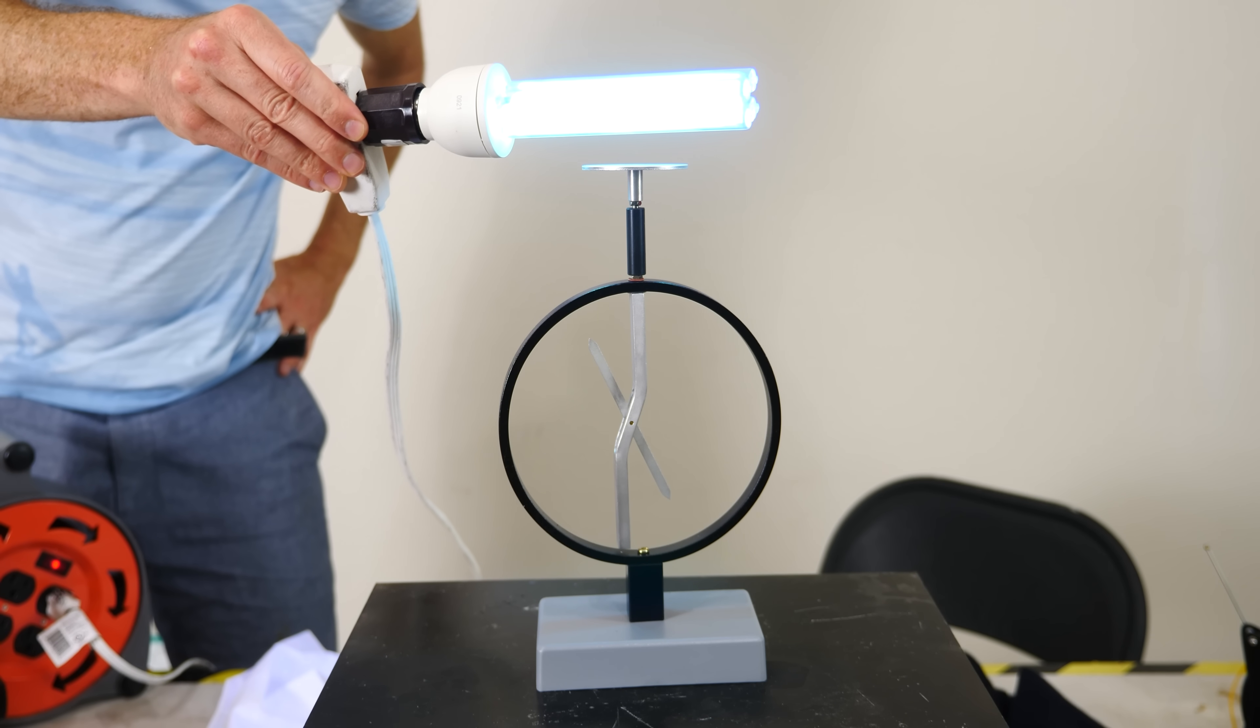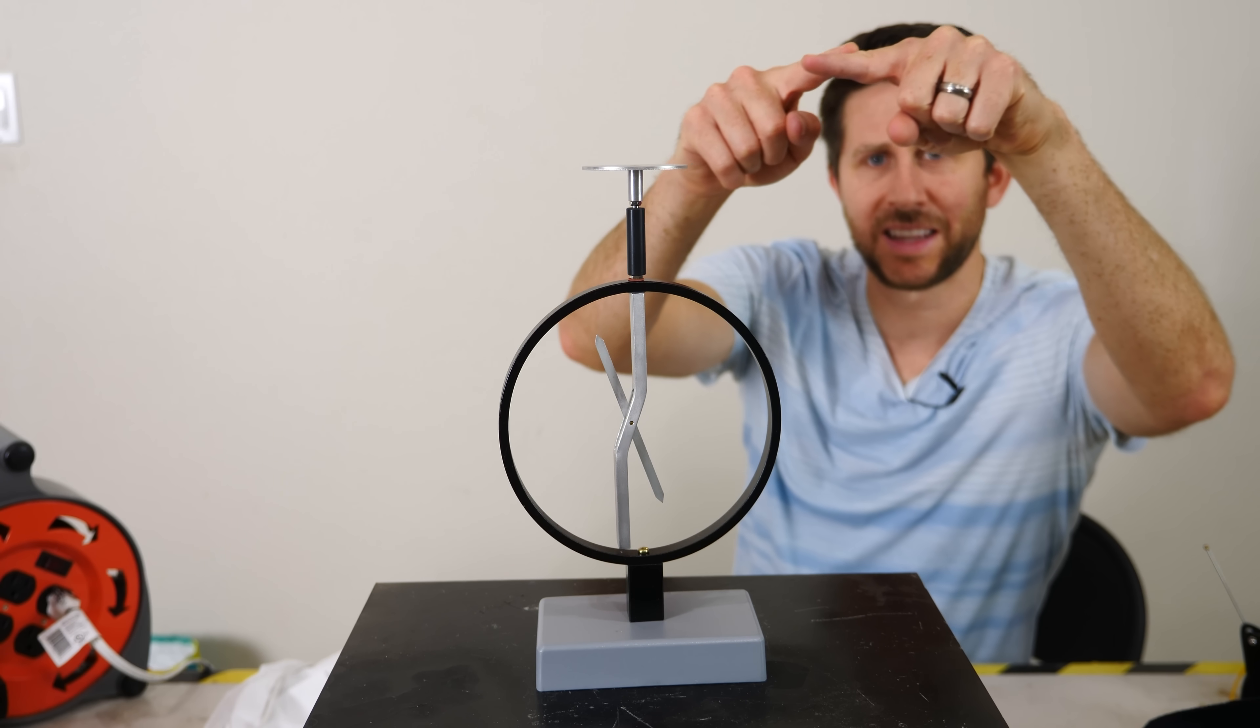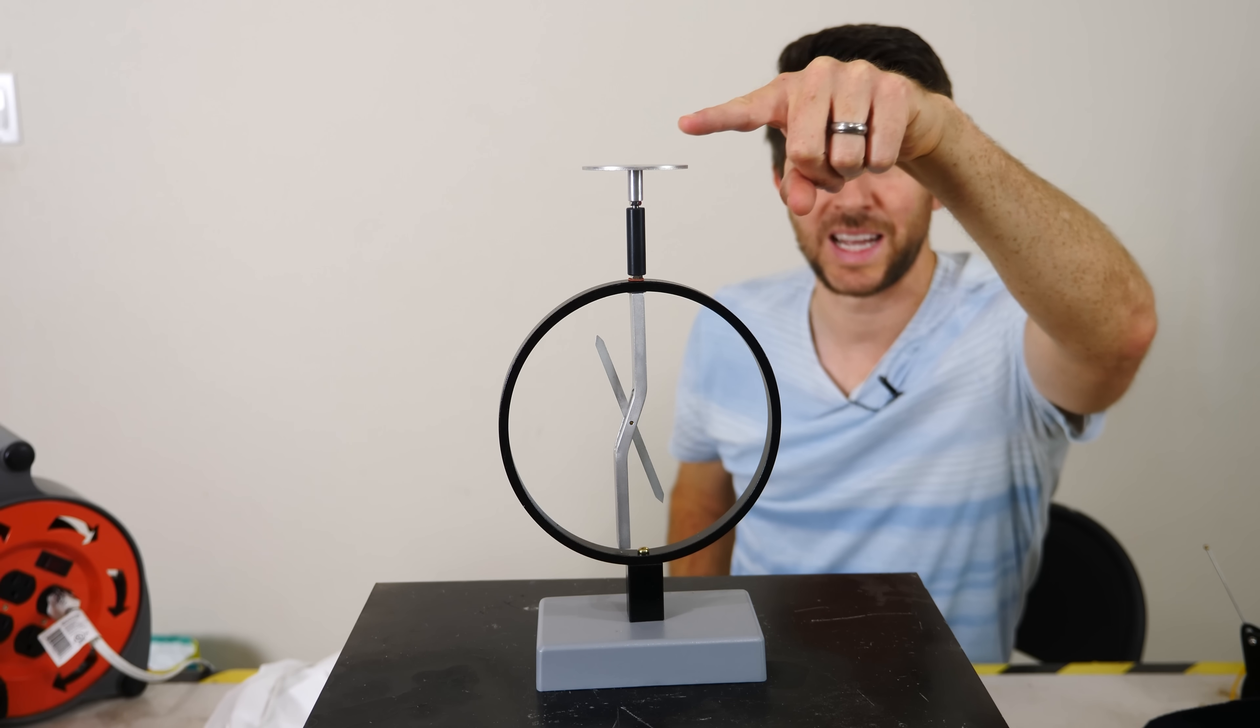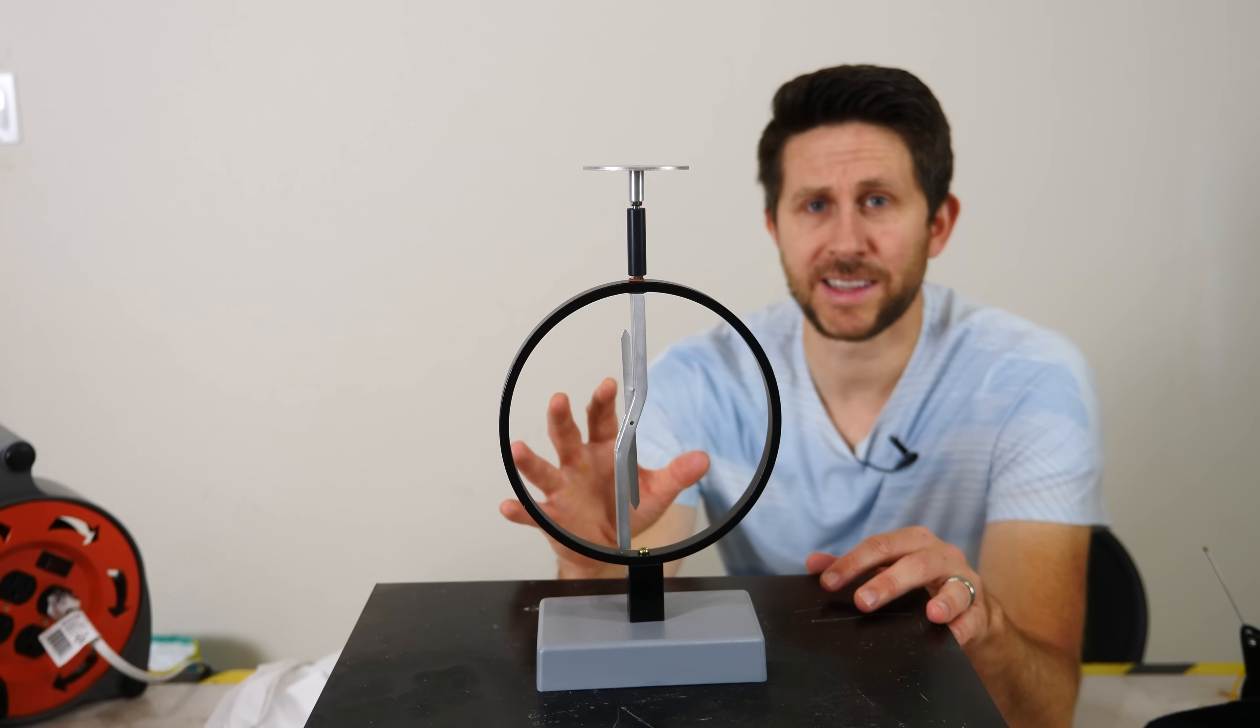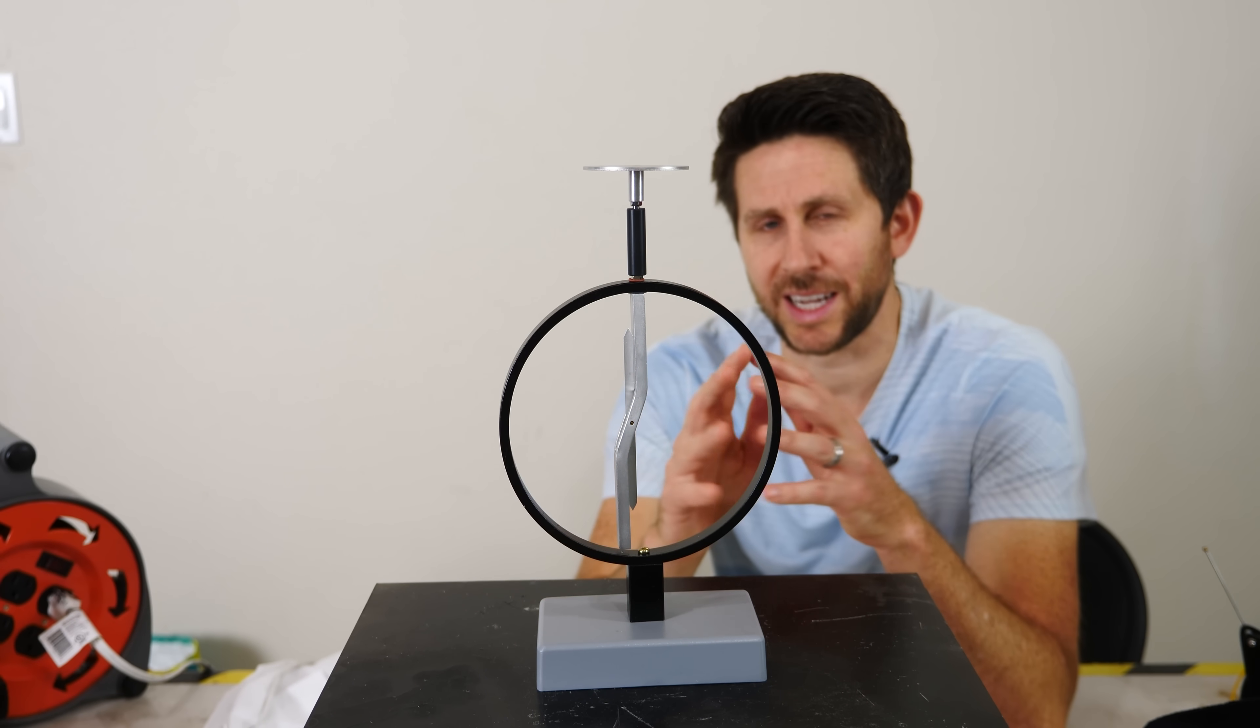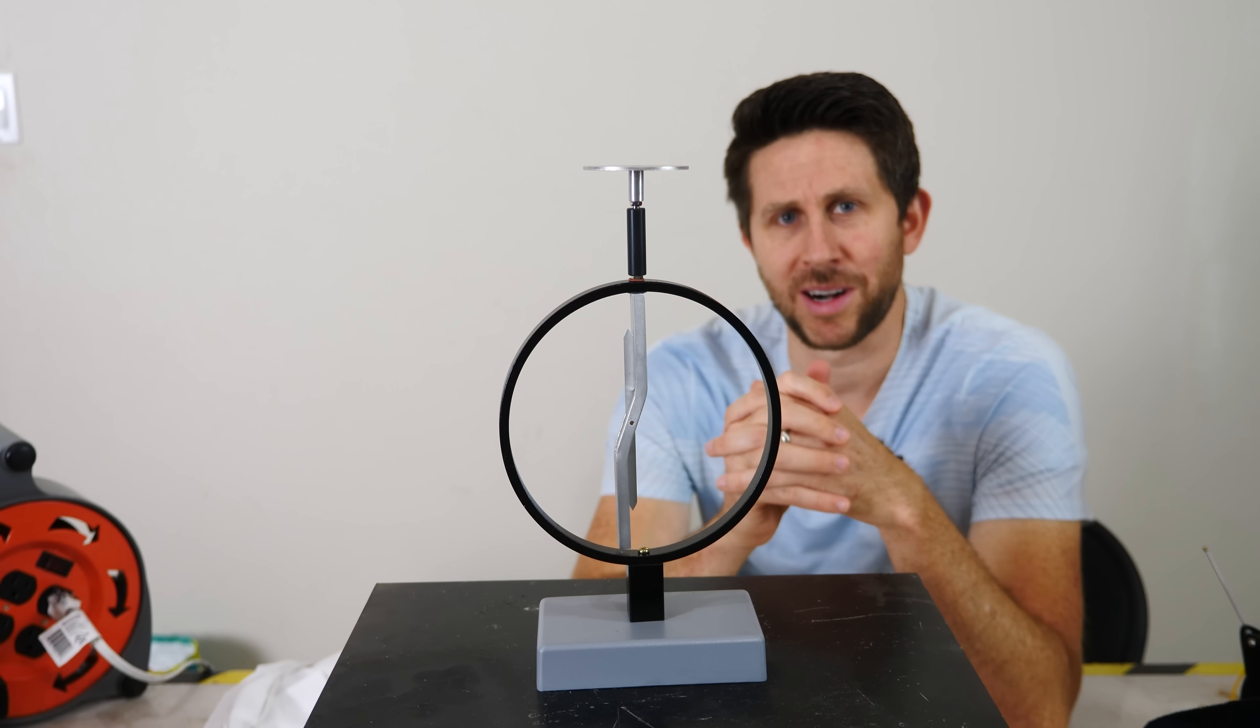So you can see that nothing happens. But if I just touch the plate and allow the electrons from my hand go into the plate, then it can discharge it. So this effect that you're seeing right now is called the photoelectric effect. And it's actually what won Einstein his Nobel Prize.